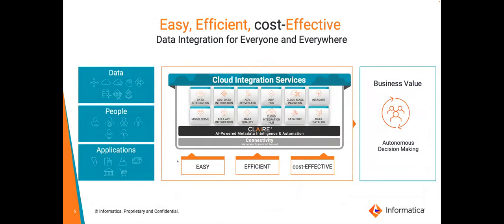To break down the data silos, application silos, and people silos, at Informatica we launched the Intelligent Cloud Data Management Platform, which provides a single unified platform for all your data management needs. Informatica Cloud breaks down data silos by connecting all data sources to data targets, whether it be data lake, data warehouse, or data-based systems on-premises or in the cloud. We also break down application silos by connecting all applications across on-premises SaaS apps with over 250-plus native connectors.